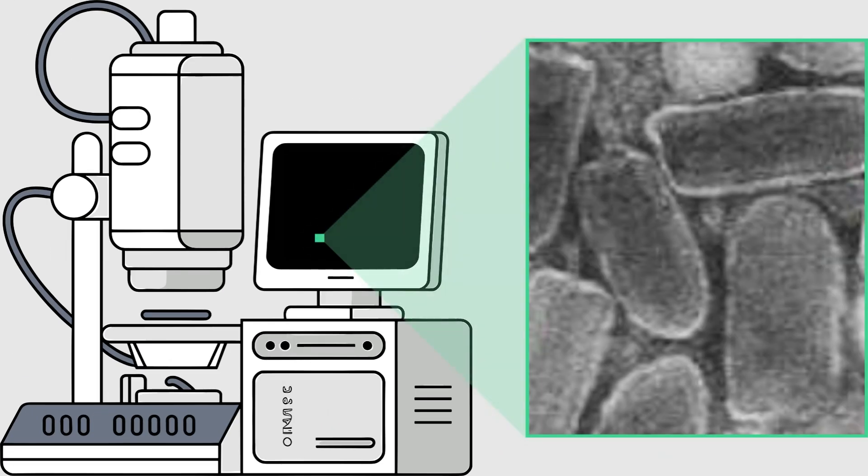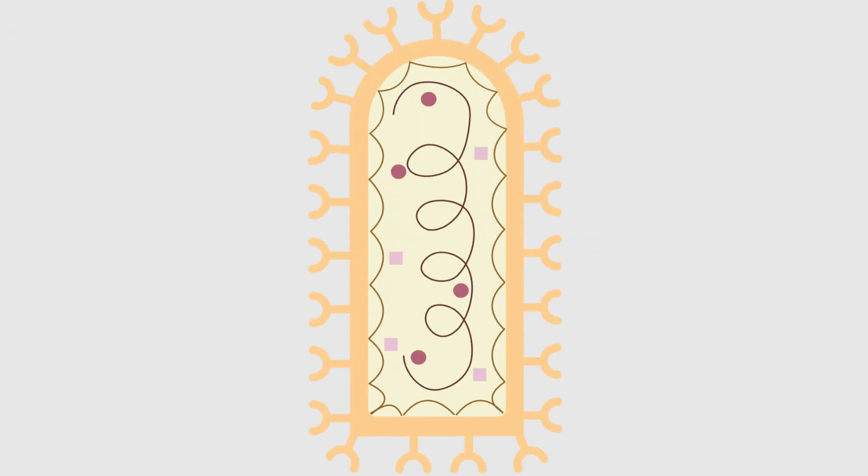In the mid-20th century, RABV was visualized for the first time using electron microscopy, confirming that rabies is caused by a virus and revealing its bullet-shaped structure.